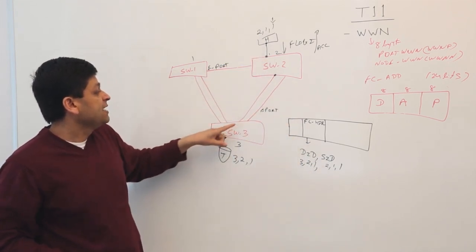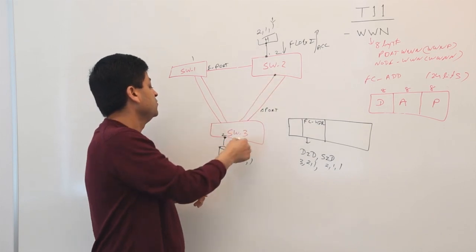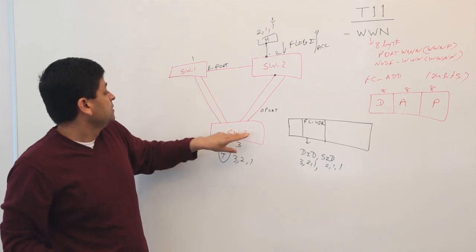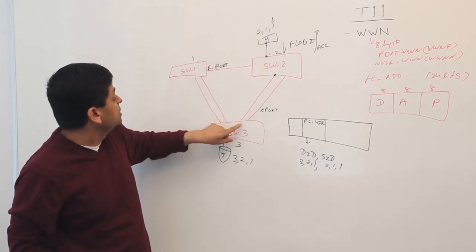Let me just send it to switch 3, and we will talk about how this switch will learn where domain 3 is. But for now, let's say that this switch already knows where domain 3 is. So he will say, okay, I need to go out to this link.